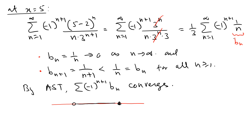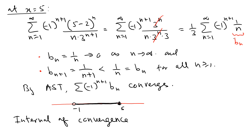So on the number line, at x equals negative 1 the series diverges (open dot), and at x equals 5 it converges (closed dot). Therefore the interval of convergence is the half-open interval from negative 1 to 5, written as I equals negative 1 to 5, open at negative 1 and closed at 5. The radius of convergence is R equals 3.